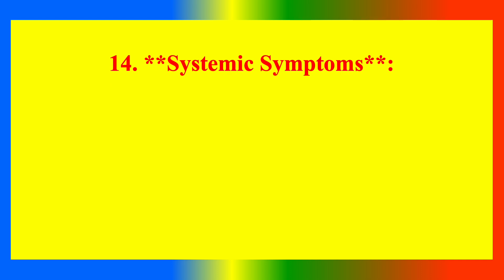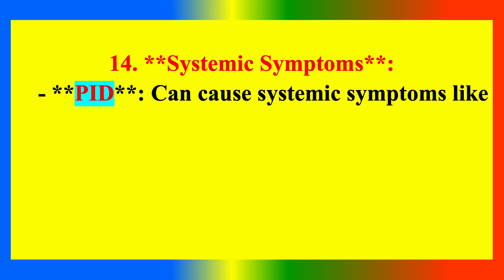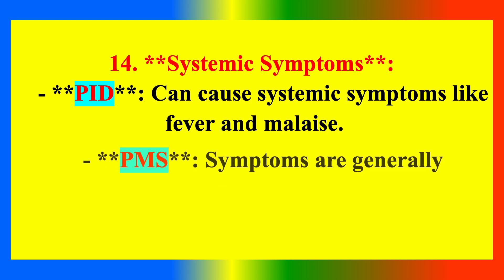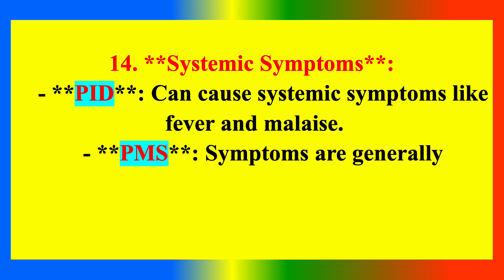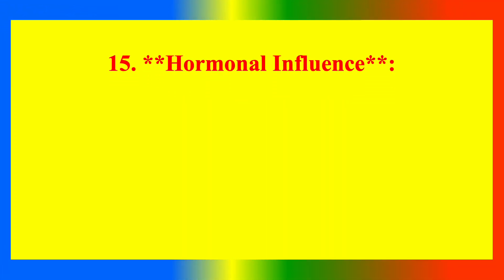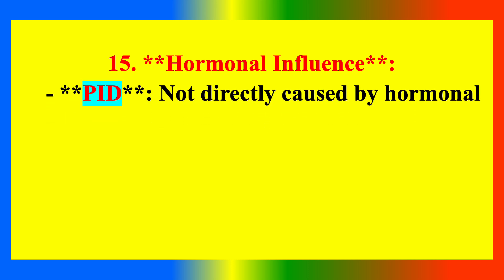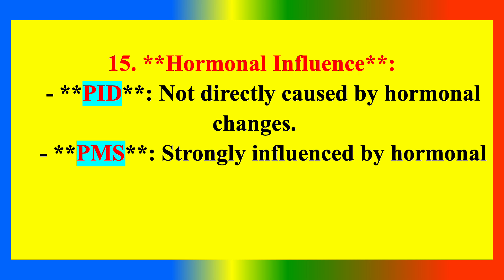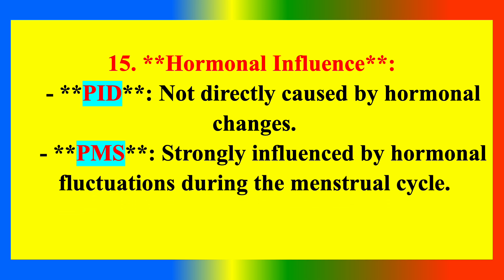Systemic symptoms: PID can cause systemic symptoms like fever and malaise. PMS symptoms are generally localized to mood changes and physical discomfort. Hormonal influence: PID is not directly caused by hormonal changes, whereas PMS is strongly influenced by hormonal fluctuations during the menstrual cycle.